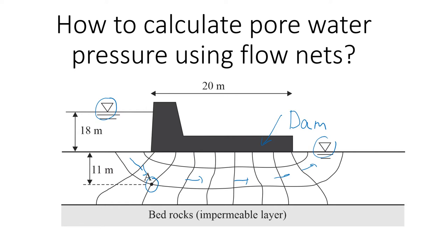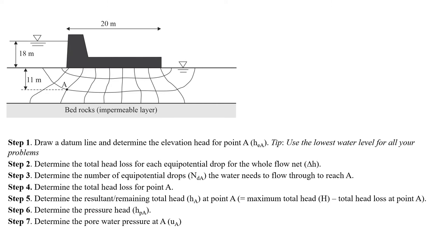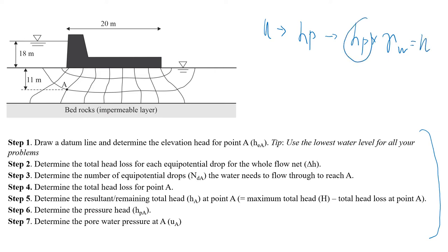To find the pore pressure at point A, we follow this procedure. The first thing we need to do is define the datum — a reference line that allows us to estimate elevation head, total head, and pressure head. To find the pore pressure, we need the pressure head, then multiply it by the unit weight of water. Pressure head equals total head minus elevation head.